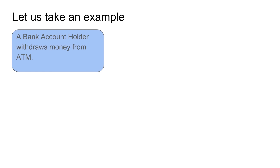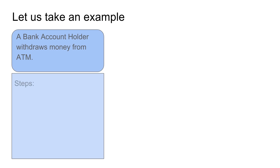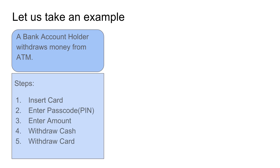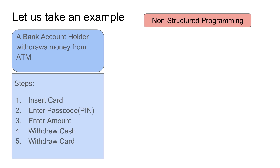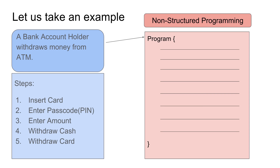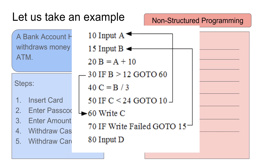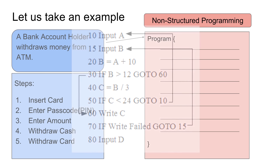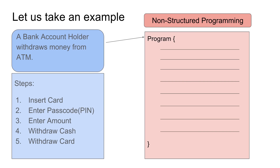Let us go deeper and take an example. A bank account holder withdraws money from an ATM. The person goes to the ATM, inserts his card, enters his passcode and the amount to be withdrawn, withdraws the cash, and takes out the card. In non-structured programming, this would be coded as a single program with all the steps inside it. You can see the entire logic written in one program, with numbered lines and conditional go-to statements that make the control jump to different parts — but it is all inside a single program.